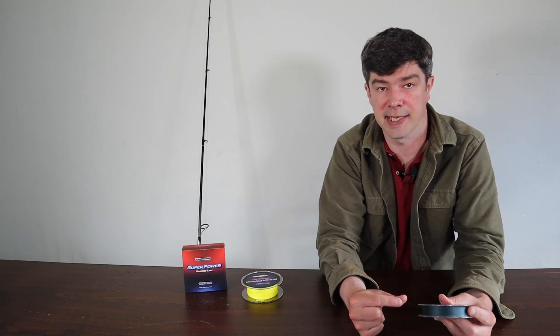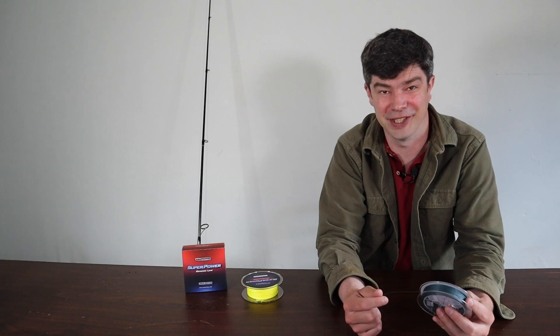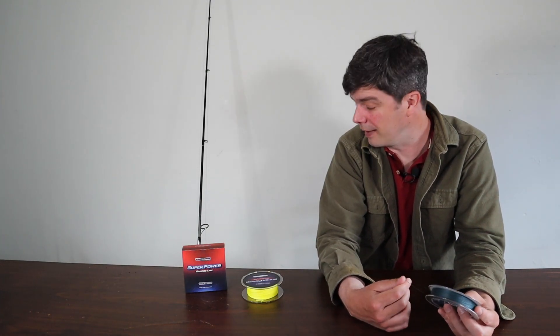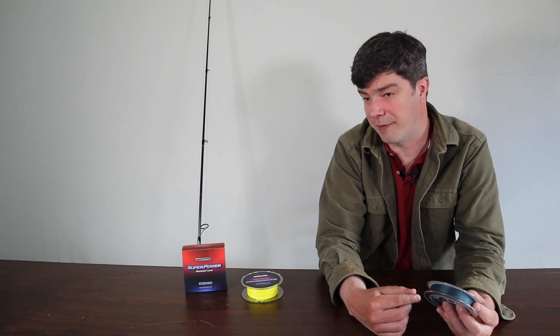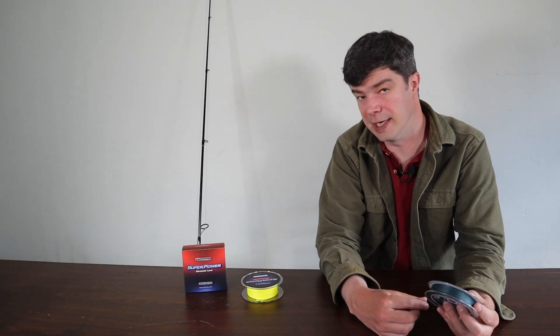The colors don't run, so it's not going to stain your reel. Like cheap braid, usually the colors run and they stain your reel. But this stuff, I've been using it for like half of last season and this season so far and none of the colors have bleeded at all.